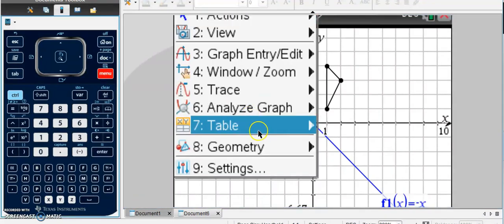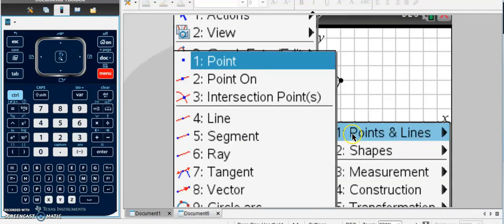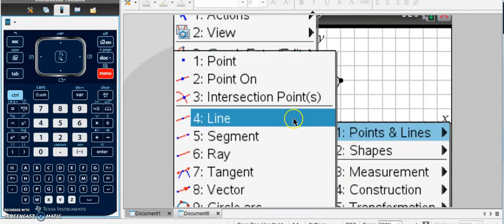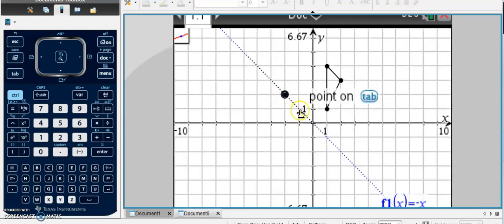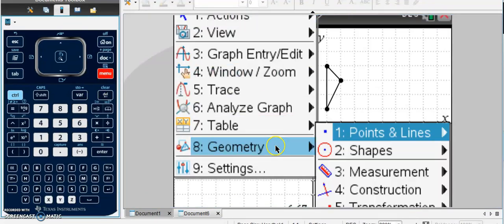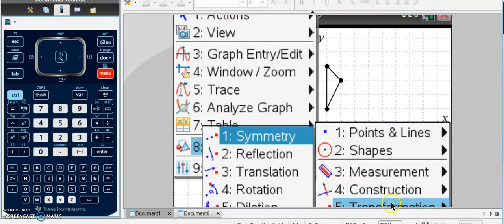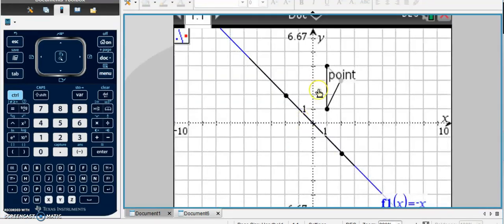So now I can go to Geometry, Points and Lines, and create a line right here using that as my guide. And go from there. Menu, Geometry, Transformation, Reflection, Choose the Triangle, Choose the Line, and there's my reflection.